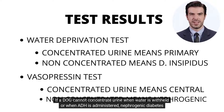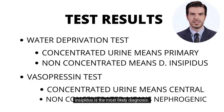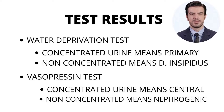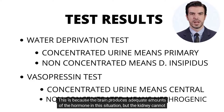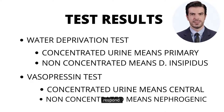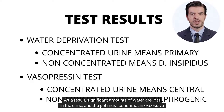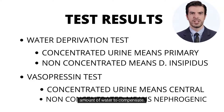If a dog cannot concentrate urine when water is withheld, or when ADH is administered, nephrogenic diabetes insipidus is the most likely diagnosis. This is because the brain produces adequate amounts of the hormone in this situation, but the kidney cannot respond. As a result, significant amounts of water are lost in the urine, and the pet must consume an excessive amount of water to compensate.